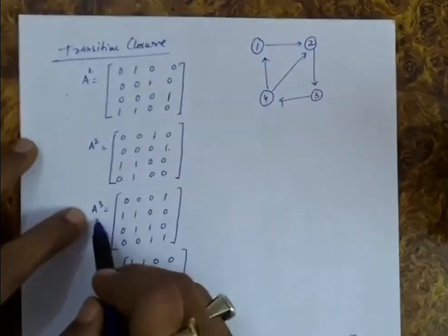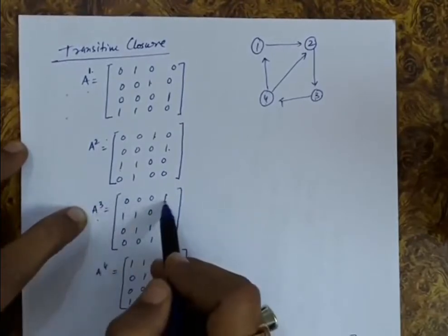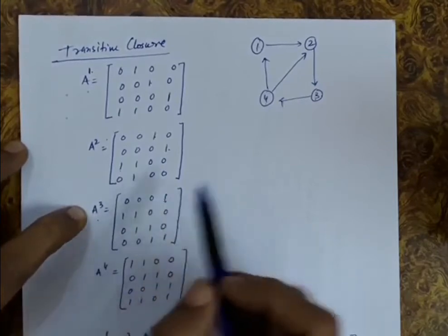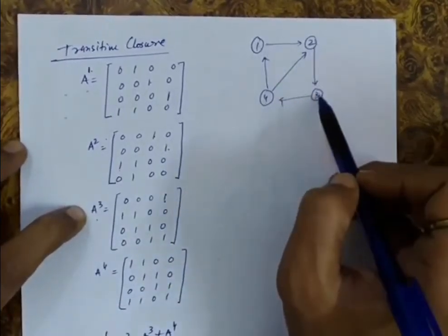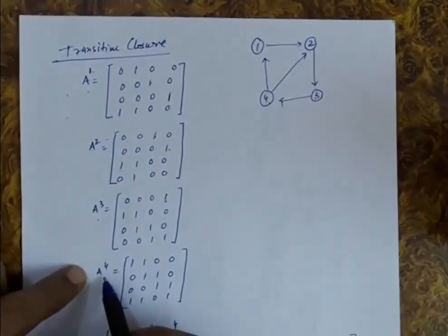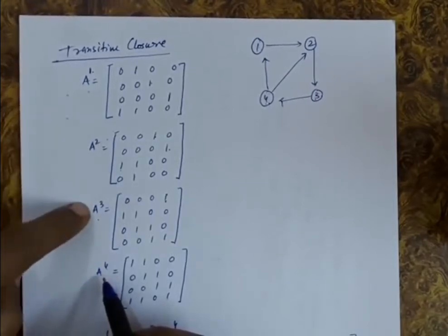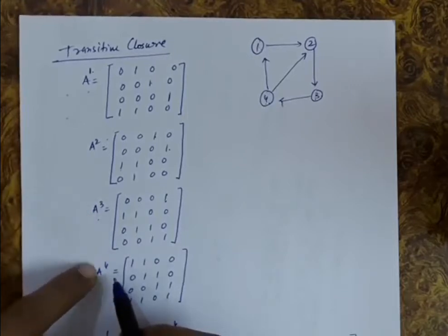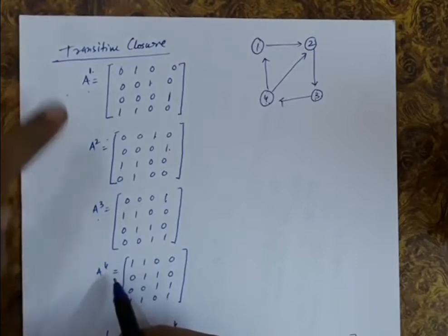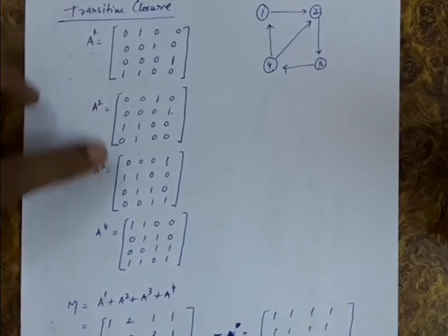Let us see A3. The entry 1 to 4 is 1, representing a length-3 path between 1 and 4: going 1 to 2, then 2 to 3, then 3 to 4 — a 3-length path. Similarly, A4 represents all the paths of length 4. A squared means A multiplied with A; A3 means A squared multiplied with A; A4 means A cubed multiplied with A.